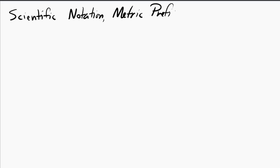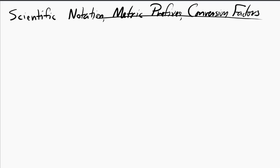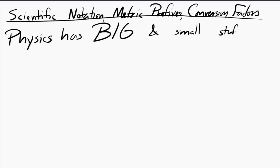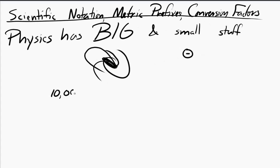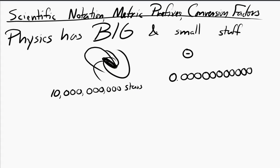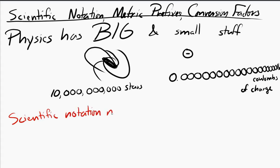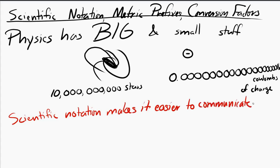Let's take a look at scientific notation, metric prefixes, and conversion factors. Physics is full of big quantities and small quantities — we have galaxies, we have electrons, and therefore we have really big numbers and really small numbers. Not only are those numbers annoying to write, but they're difficult to glance at and understand just how big or small they are. Scientific notation is designed to make it easier to communicate magnitude by using a factor of 10.